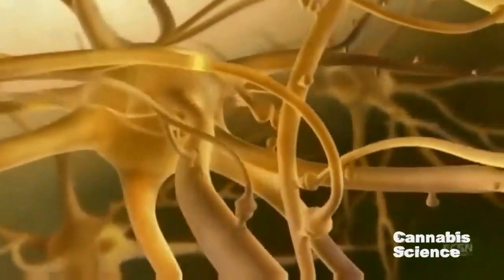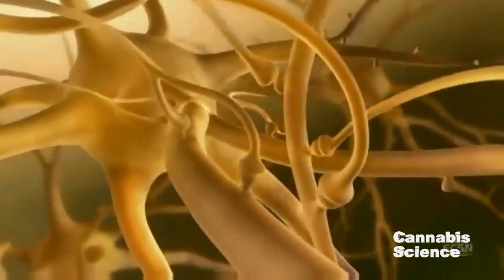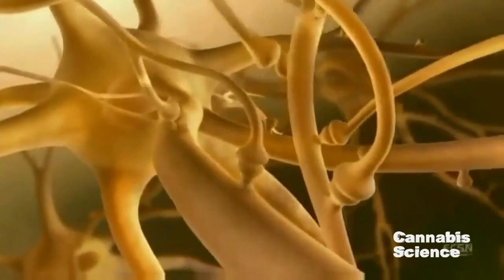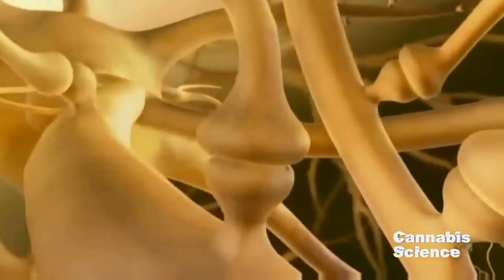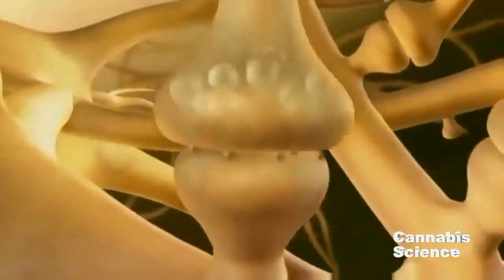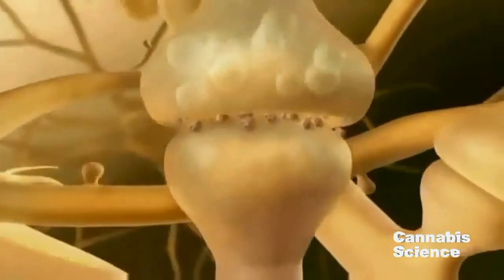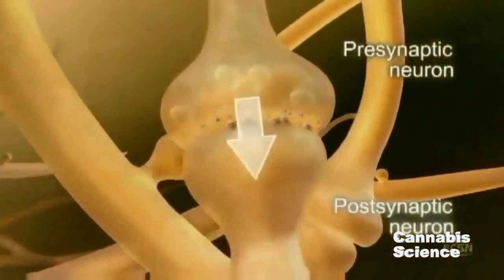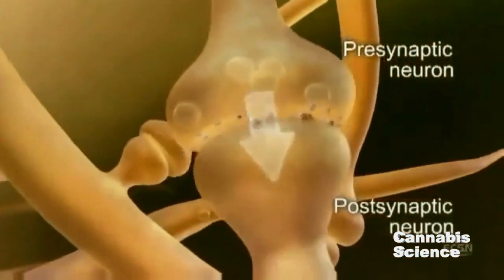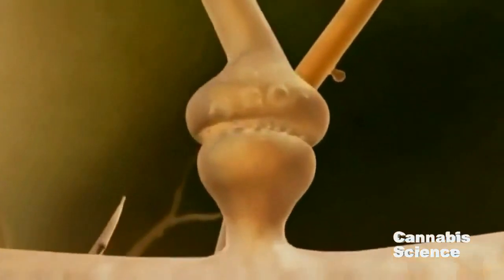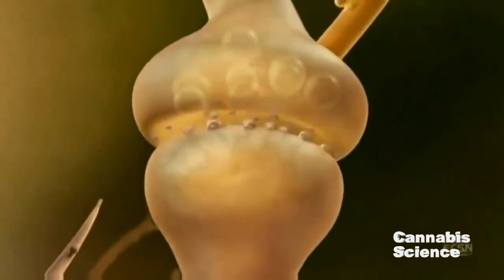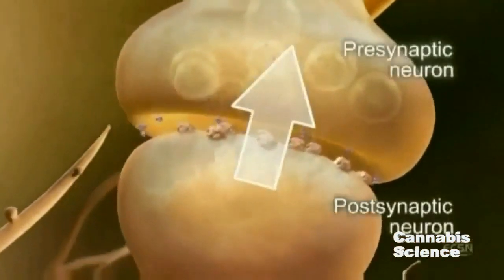Within the brain, CB1 receptors are among the most abundant G-protein-coupled receptors. However, in contrast to classical signaling, where information travels from pre- to post-synaptic neurons, the ECS uses retrograde signaling — where information travels from post- to pre-synaptic neuron.